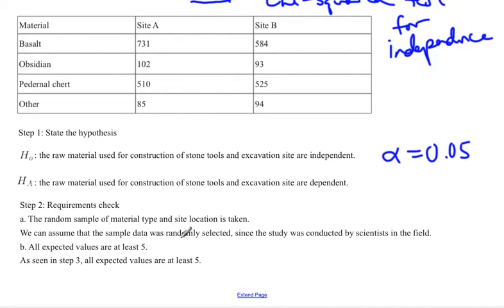The other assumption behind a chi-squared test for independence is that all expected values are at least 5. We don't know that yet because we don't know what the expected values are. These values here are the observed values. We have to find the expected value, so we can't actually answer this question yet until we've calculated the expected values. We'll come back to this.